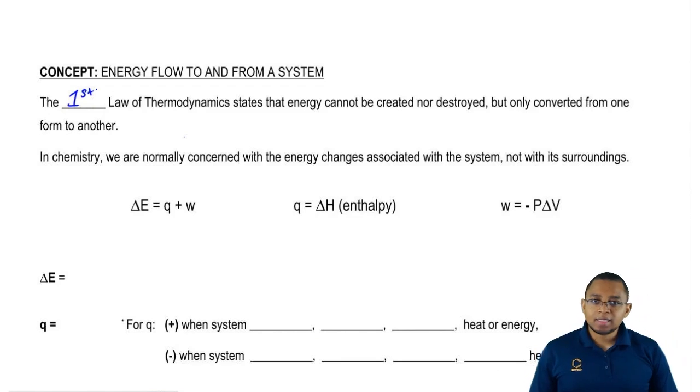What this really means is anytime we have a balanced chemical reaction, the number of atoms and the types of atoms have to be the same on both sides. If I start out with 10 hydrogens as reactants, I have to end with 10 hydrogens as products. That's what the first law of thermodynamics really is saying.